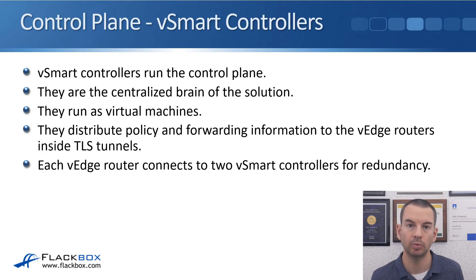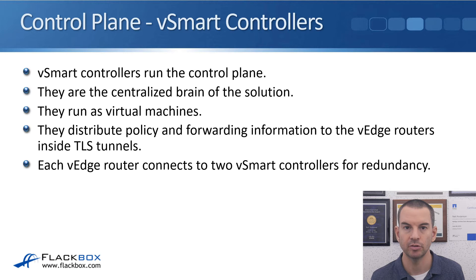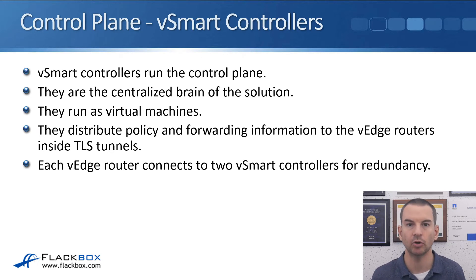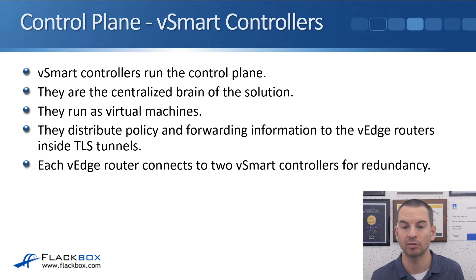The V-Smart controllers are the centralized brain of the solution. They run as virtual machines and distribute policy and forwarding information to the V-Edge routers via TLS tunnels. This is where the control plane runs — building all the routes between the different routers and telling them how to forward traffic between each other. Each V-Edge router connects to two V-Smart controllers for redundancy.